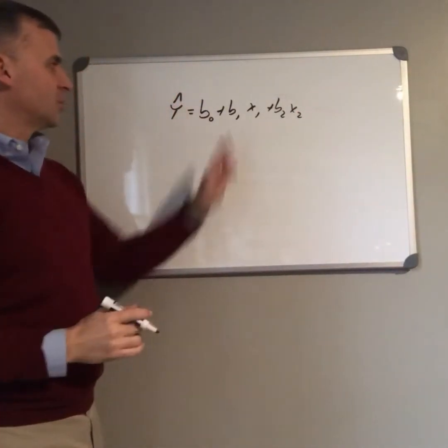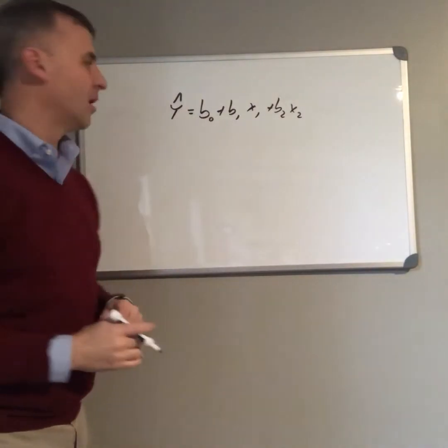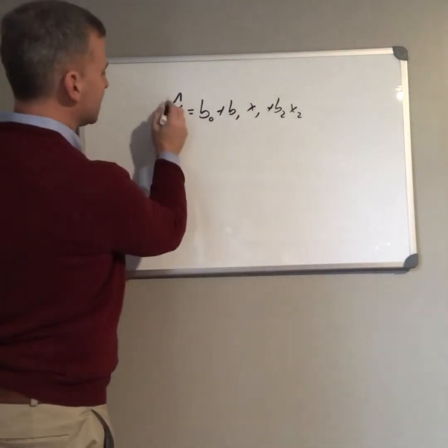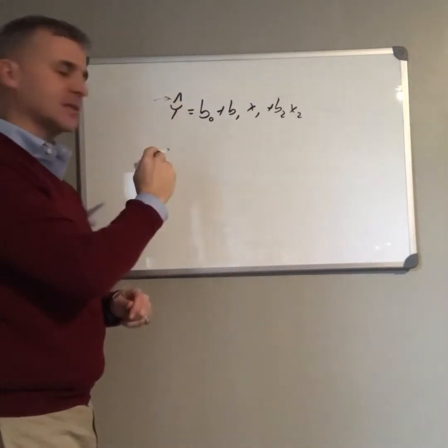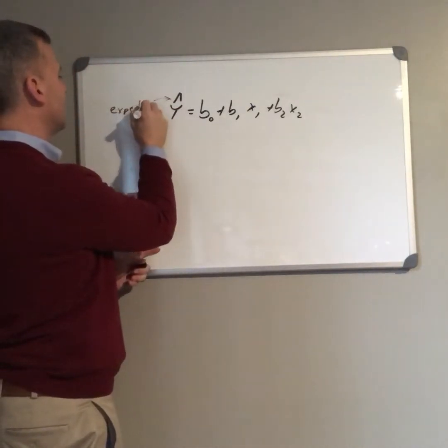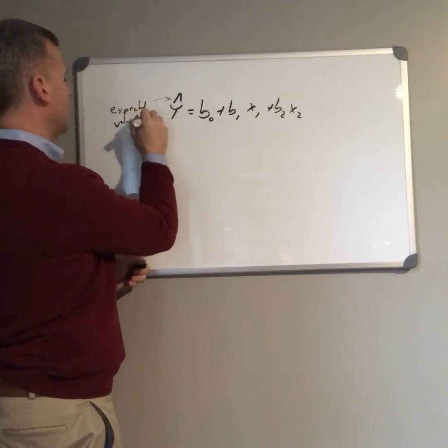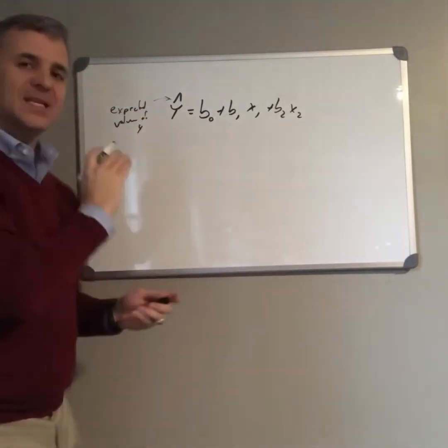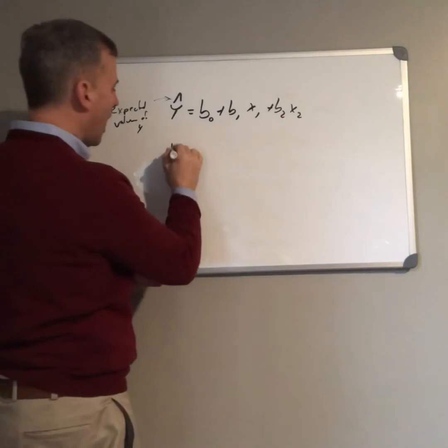Two variables predicting a y variable. This hat, this caret here, says that this is the expected value of y. But it's not the actual value of y.